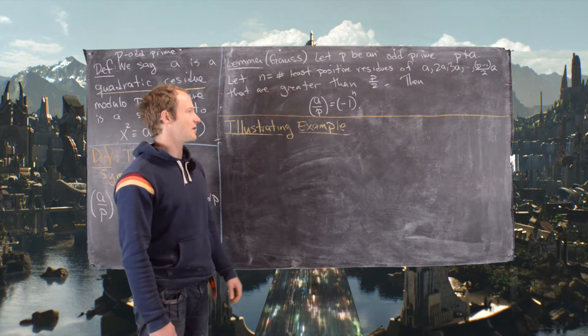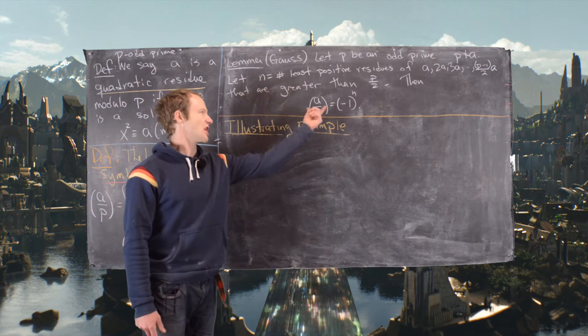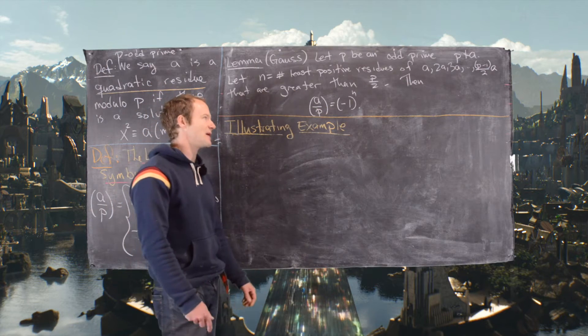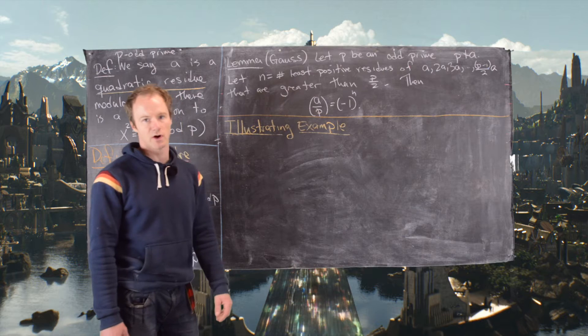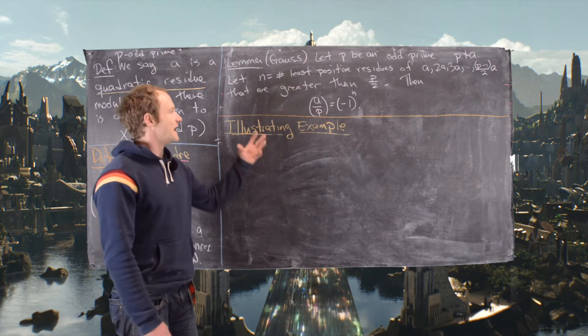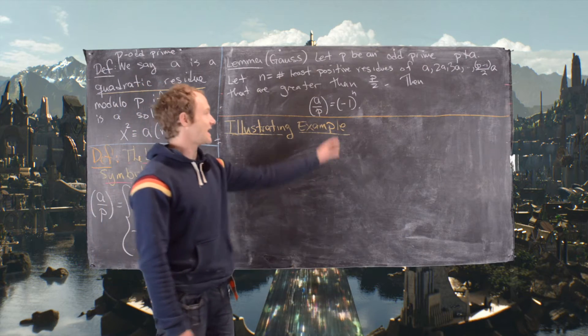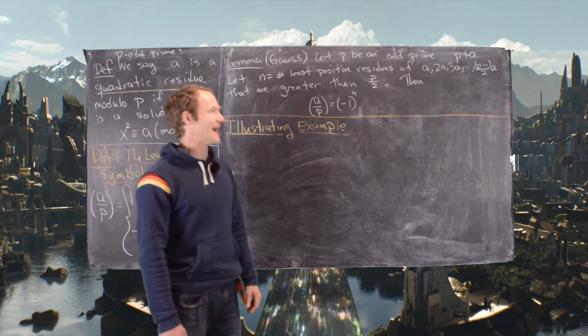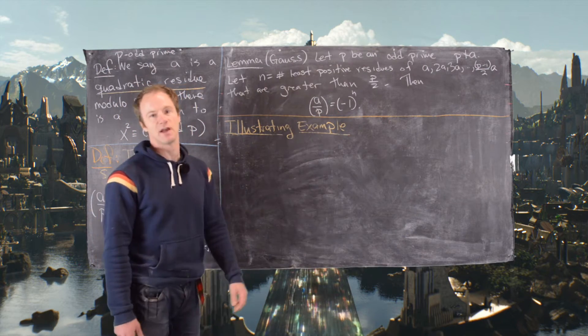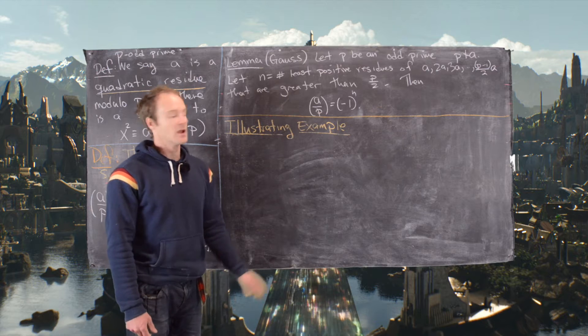The conclusion of the theorem is that the Legendre symbol (a/p) — in other words, is a a quadratic residue — is answered by (-1) to the power n.